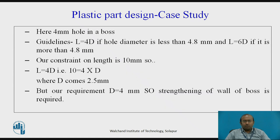The iteration moves further. Here, the 4 mm hole is in the BOSS. The guideline is L = 4D if the hole diameter is less than 4.8 mm, and L = 6D if it is more than 4.8 mm. Our constraint on the length is 10 mm, so L = 4D, giving D = 2.5. But our requirement is D = 4, so strengthening of the wall of the BOSS is required.